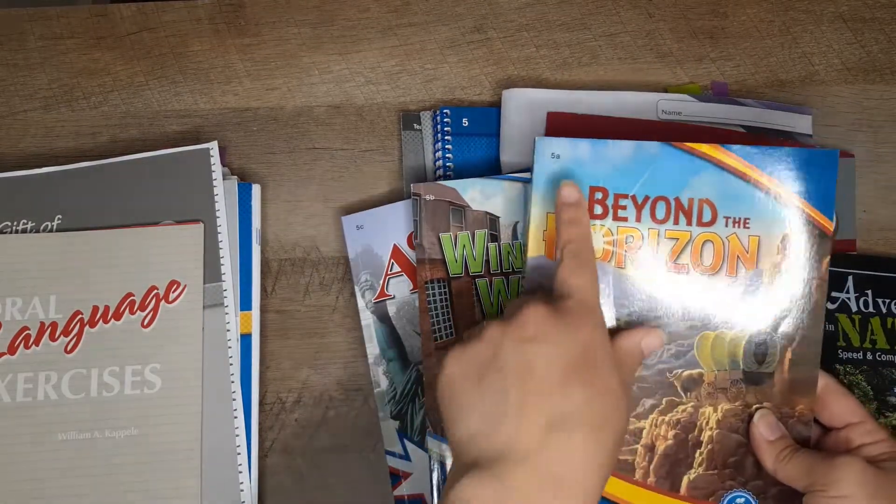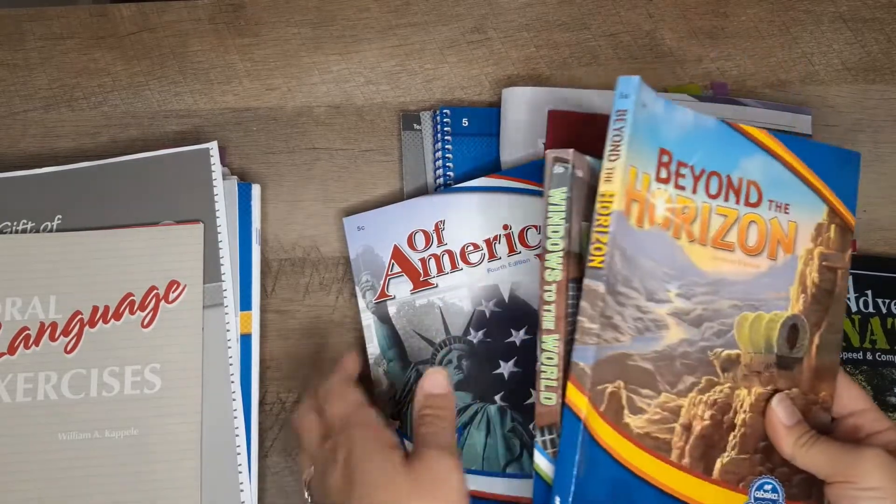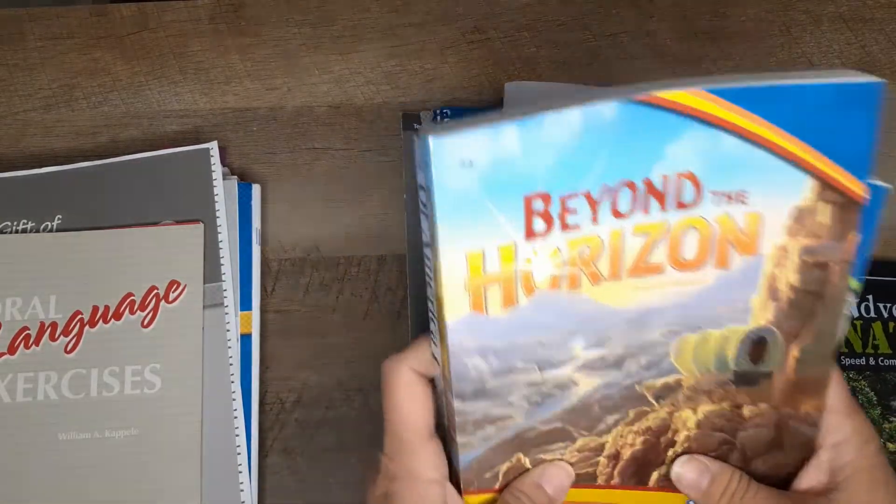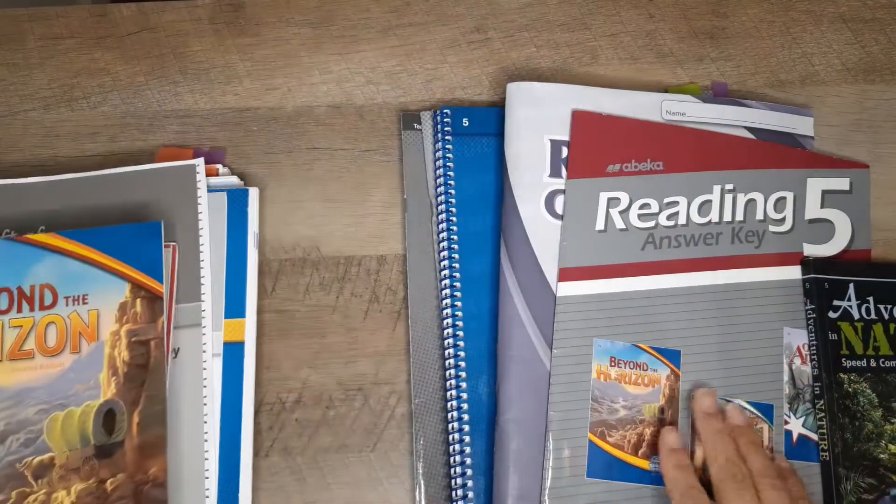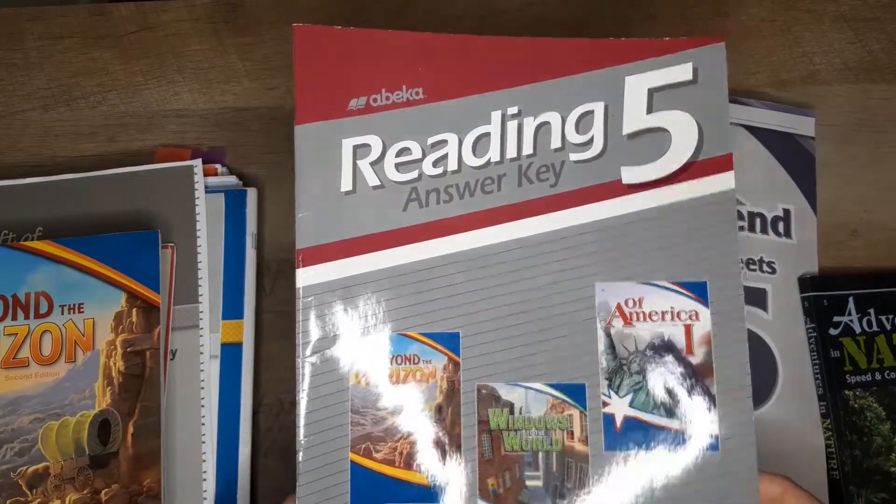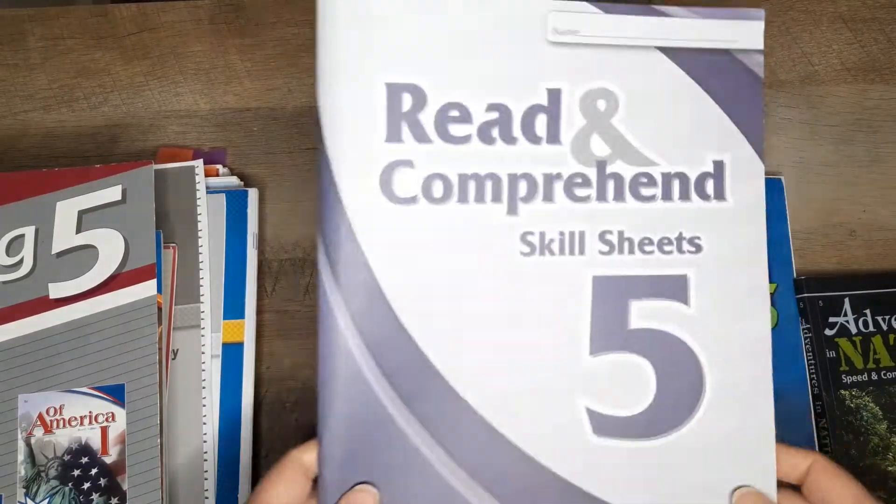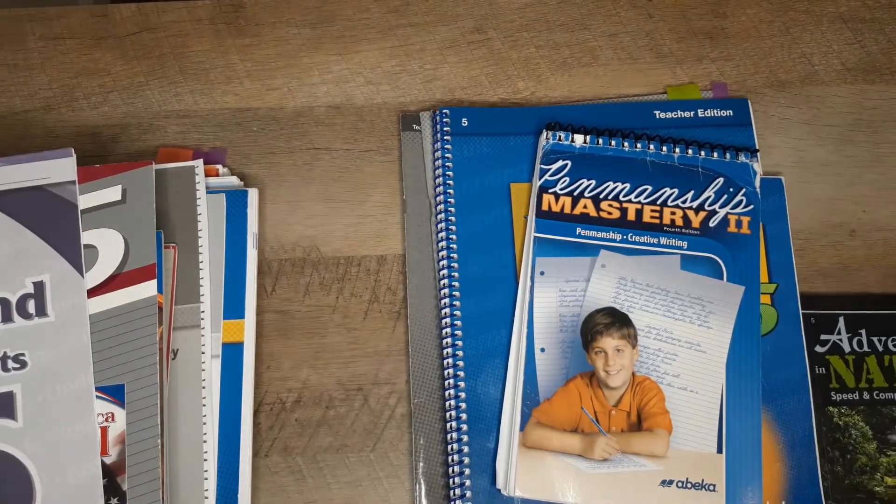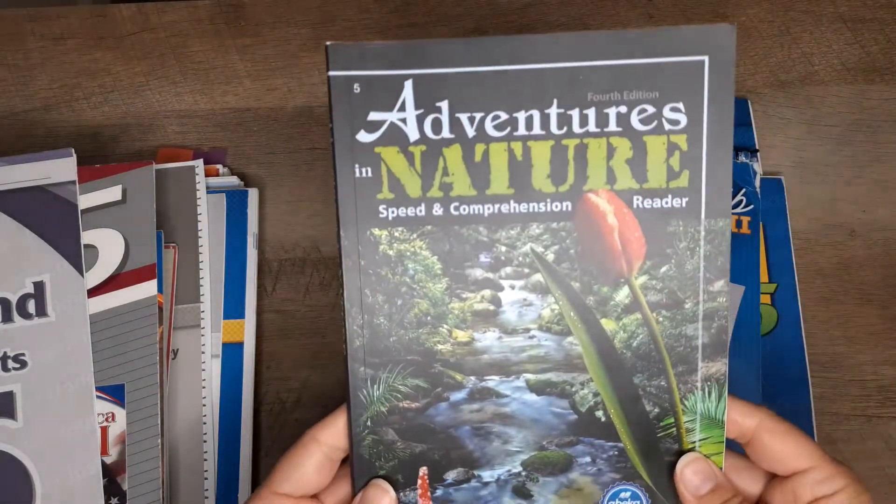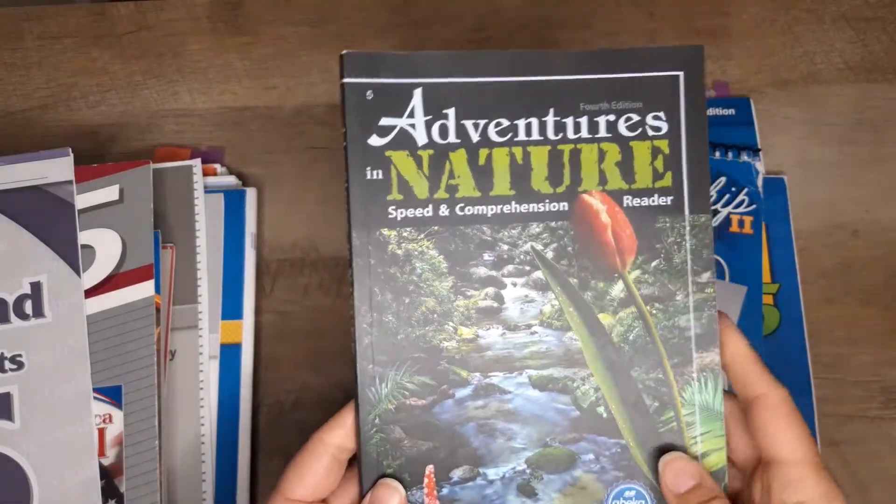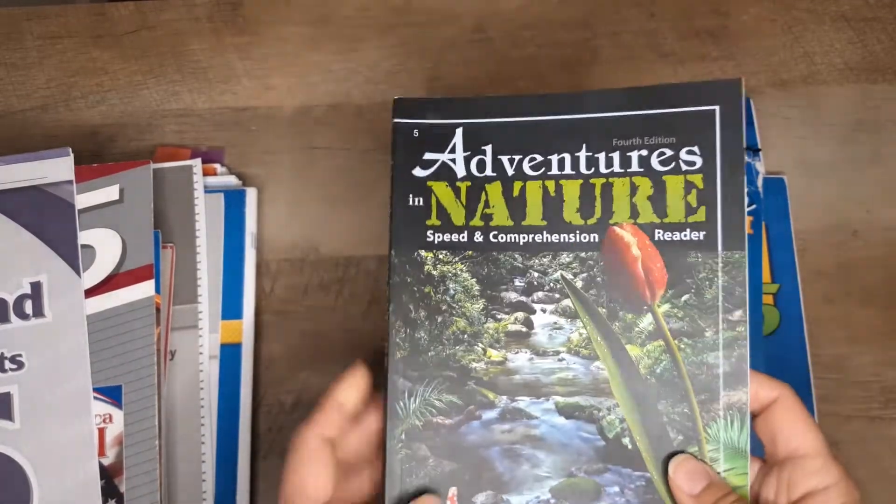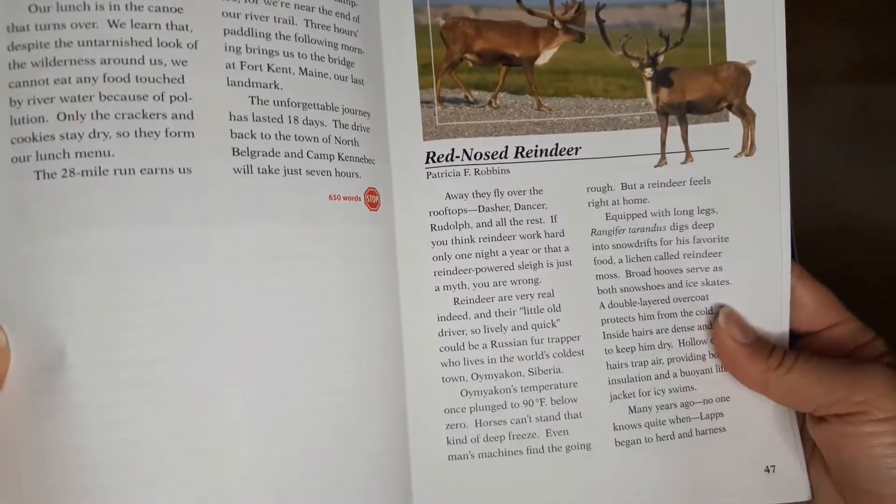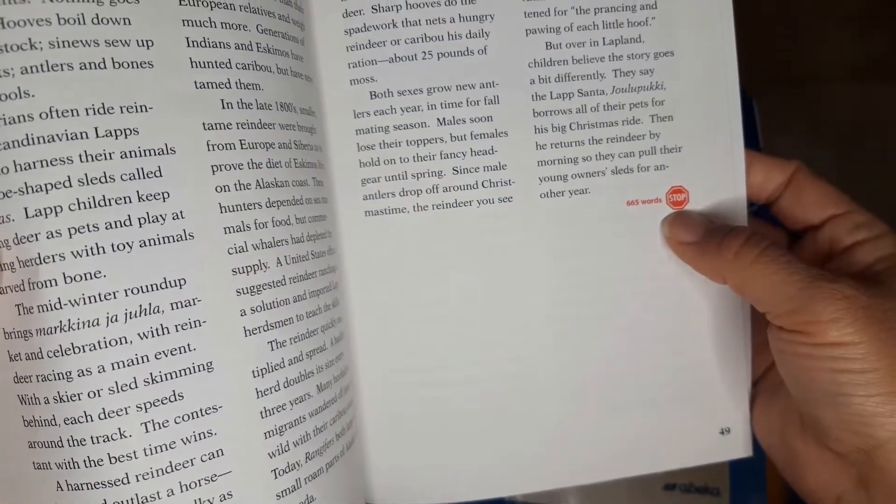For reading you get these three books, A, B, and C. That's the order that you're going to read them in. Then you get the comprehension questions. You also get a read and comprehend skill sheet, Adventures in Nature speed and comprehension.